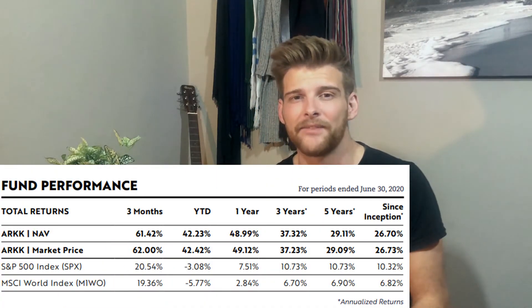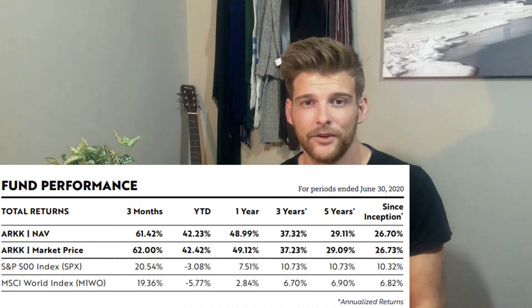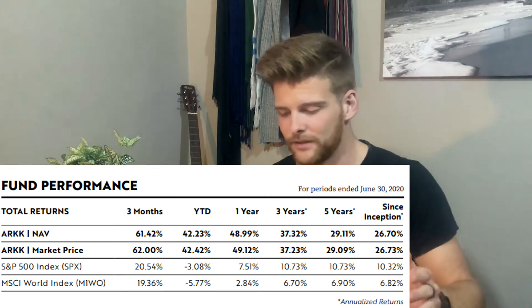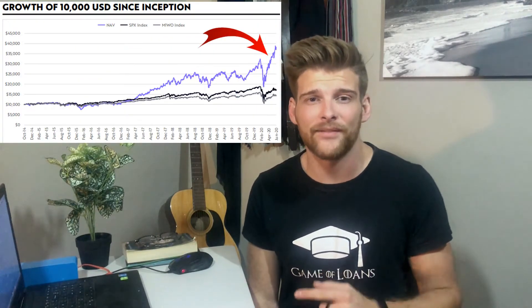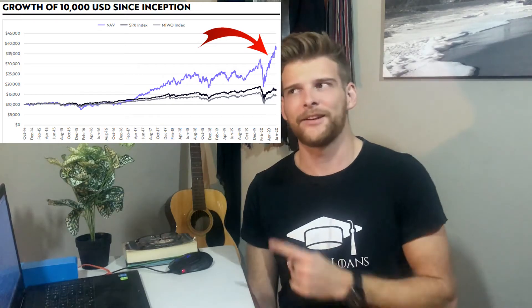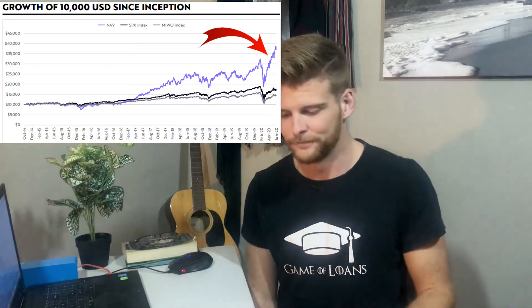Some main holdings of the ARK ETF include Tesla, Square — a major payments company also embracing cryptocurrency — and Proto Labs, a company where you send your designs and they manufacture your part by 3D printing in metal or plastic. The ARK ETF's net asset value over the past five years is 29.11%, and in the past year alone it made 48.99% — meaning if you put your money in, after one year it would have grown 49%.